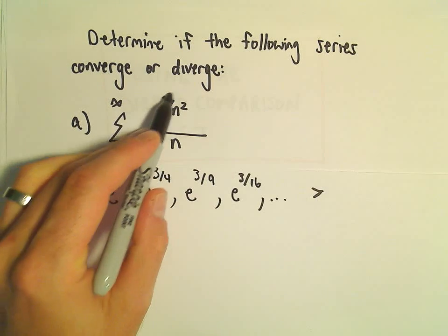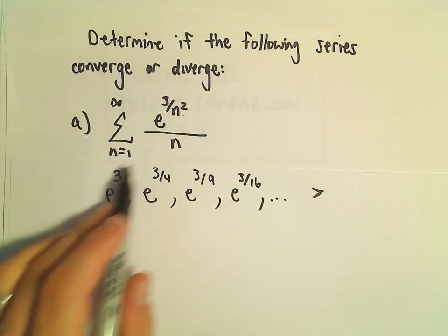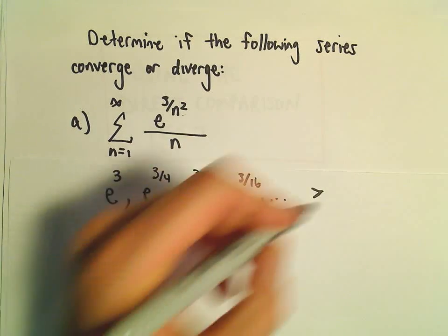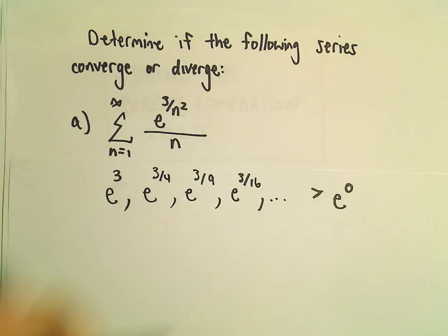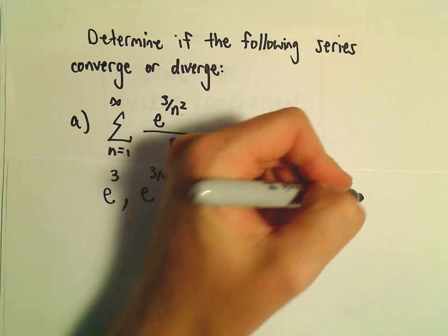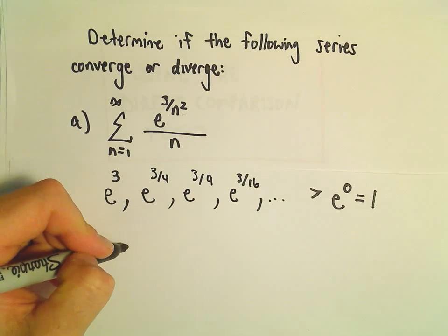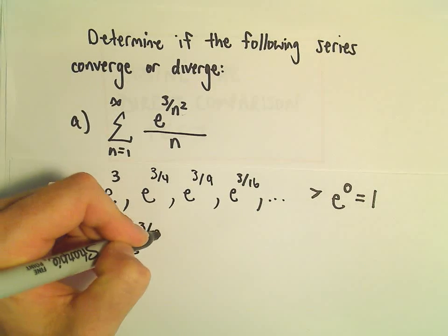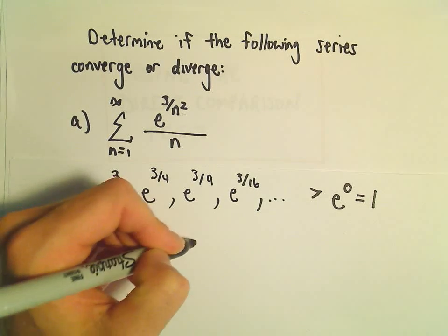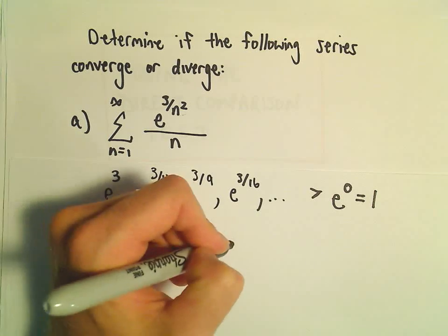All of these numbers will always have some positive exponent. All of these numbers will be bigger than e raised to the 0 power, but e to the 0 power is just 1. Well, so we've got e to the 3 over n squared. That's always going to be larger than 1.